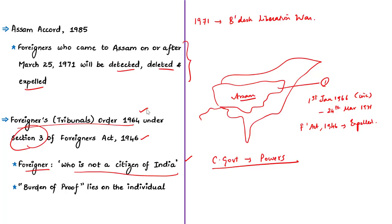Coming back to the editorial: the Foreigners Tribunals in Assam have seen two types of cases — persons against whom a reference has been made by the border police, and persons whose names have been marked as doubtful in the electoral rolls. Section 9 of the Foreigners Act says that the burden of proof — proving that a person is not a foreigner — lies upon that particular person. They must provide substantiating documents to the Foreigners Tribunal, which will then take a decision on citizenship.